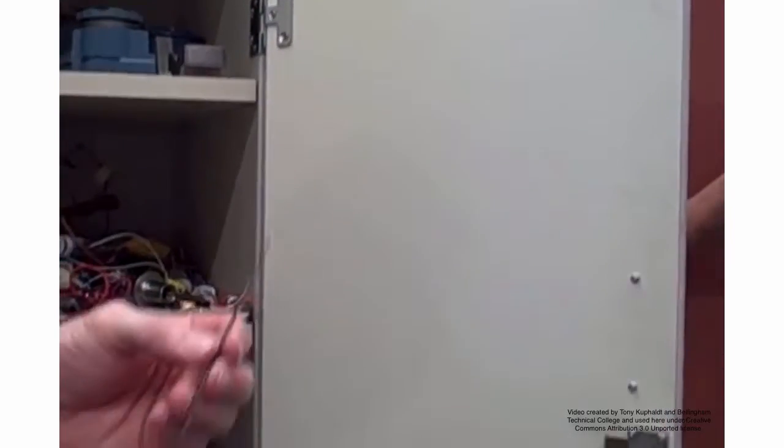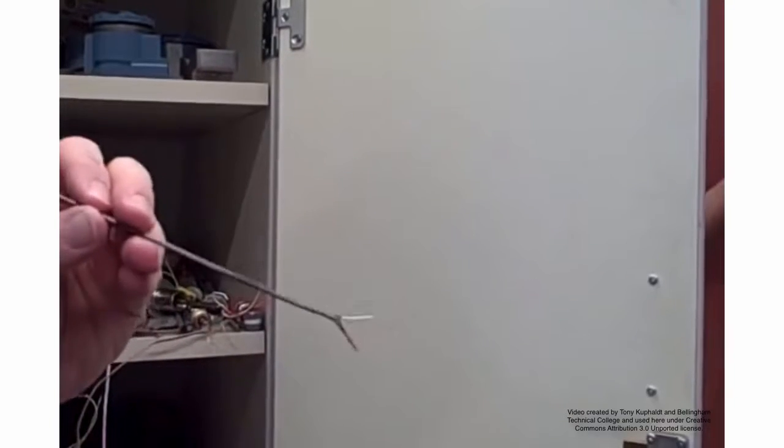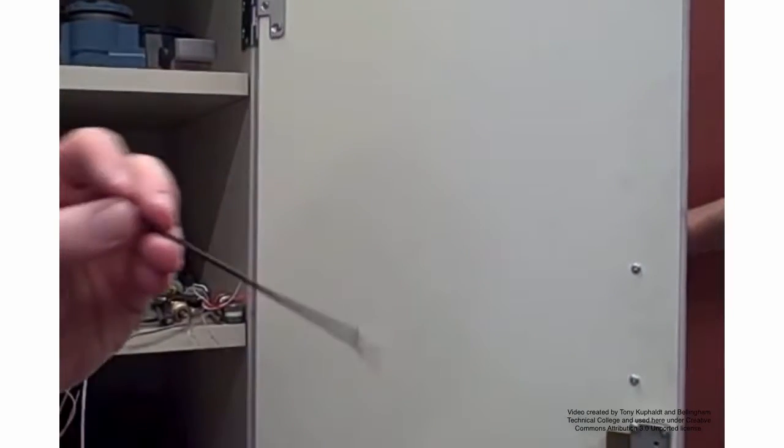What we're looking at here is a piece of thermocouple wire. This right here is type J. We can tell that from the color code, white and red, with red being negative and white being positive.